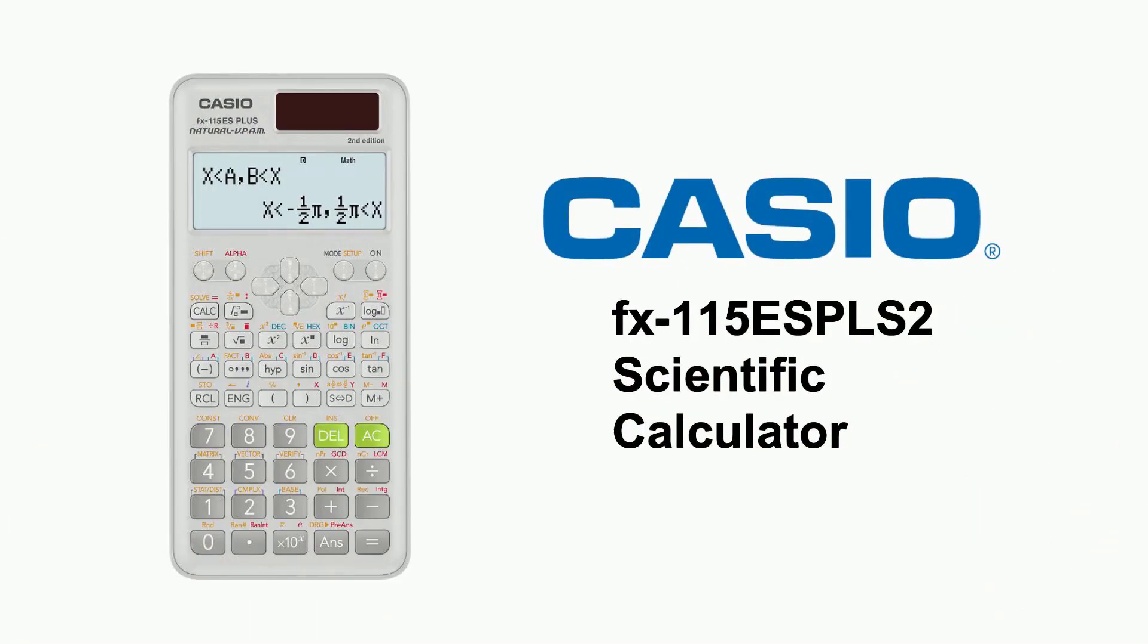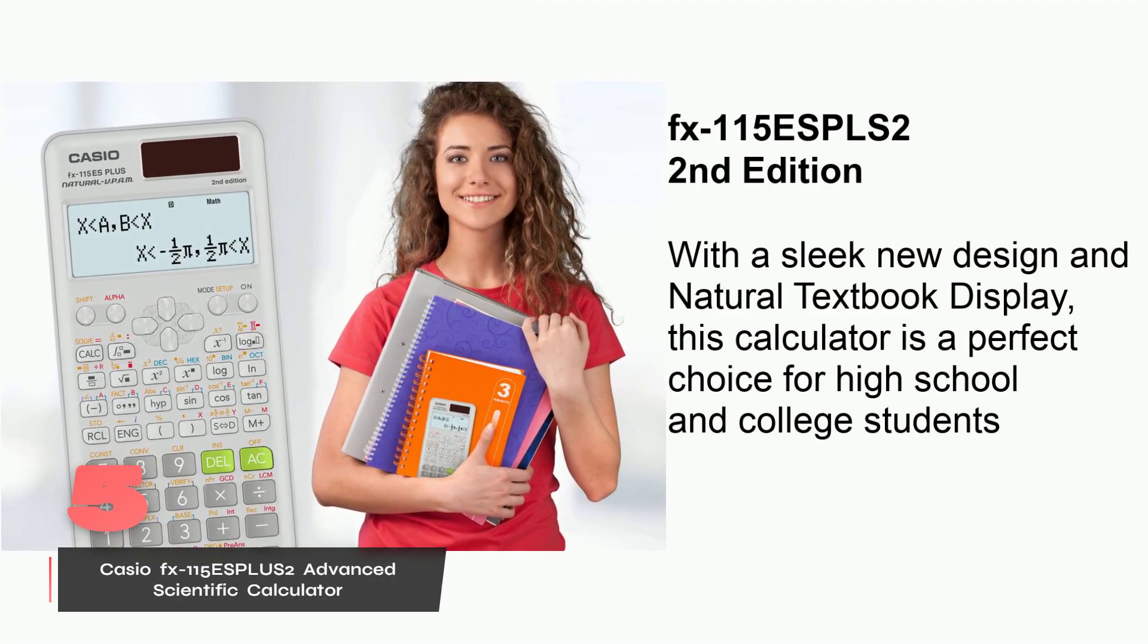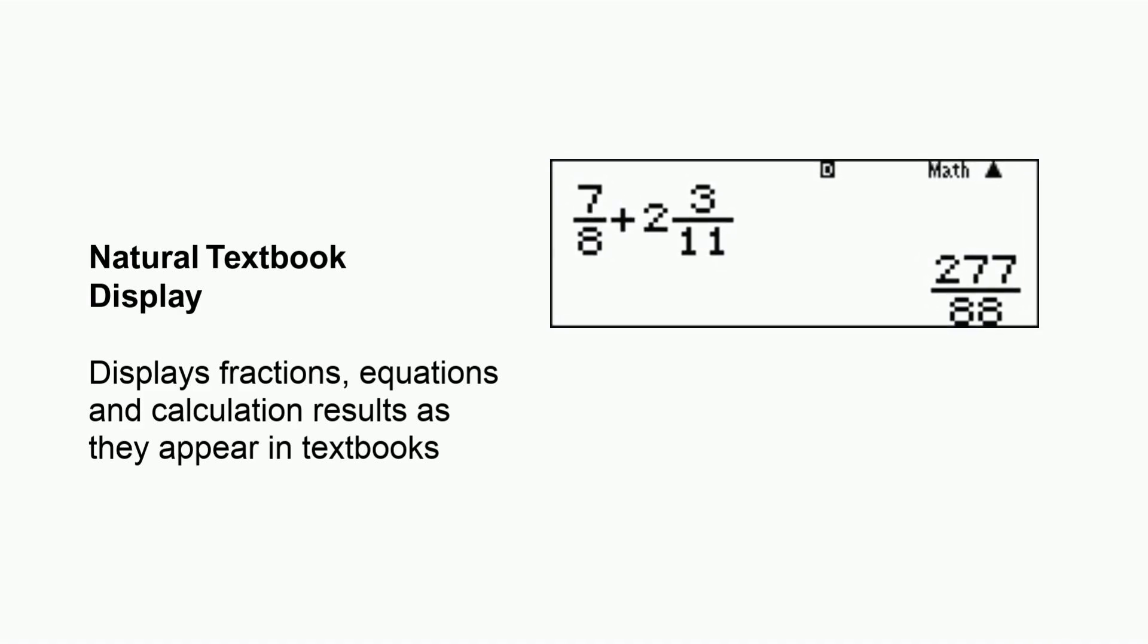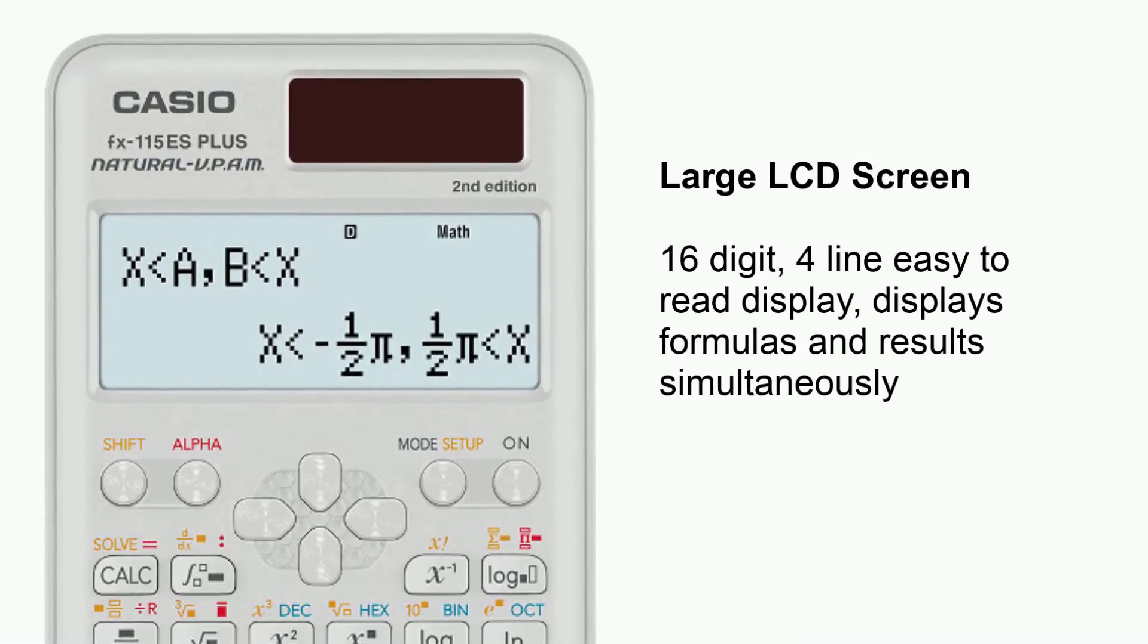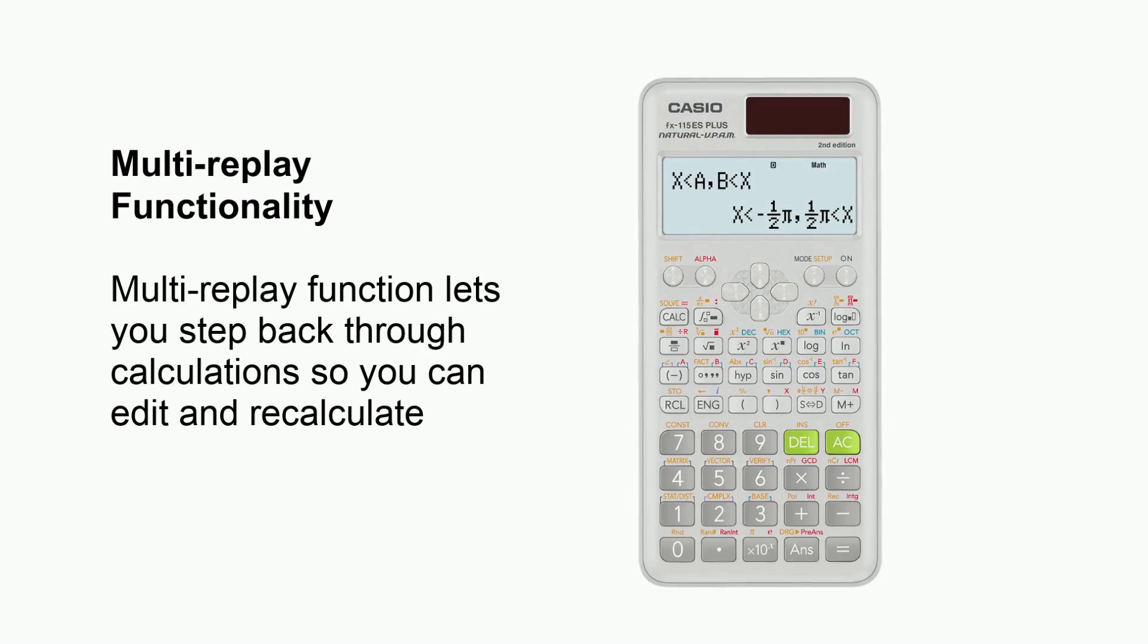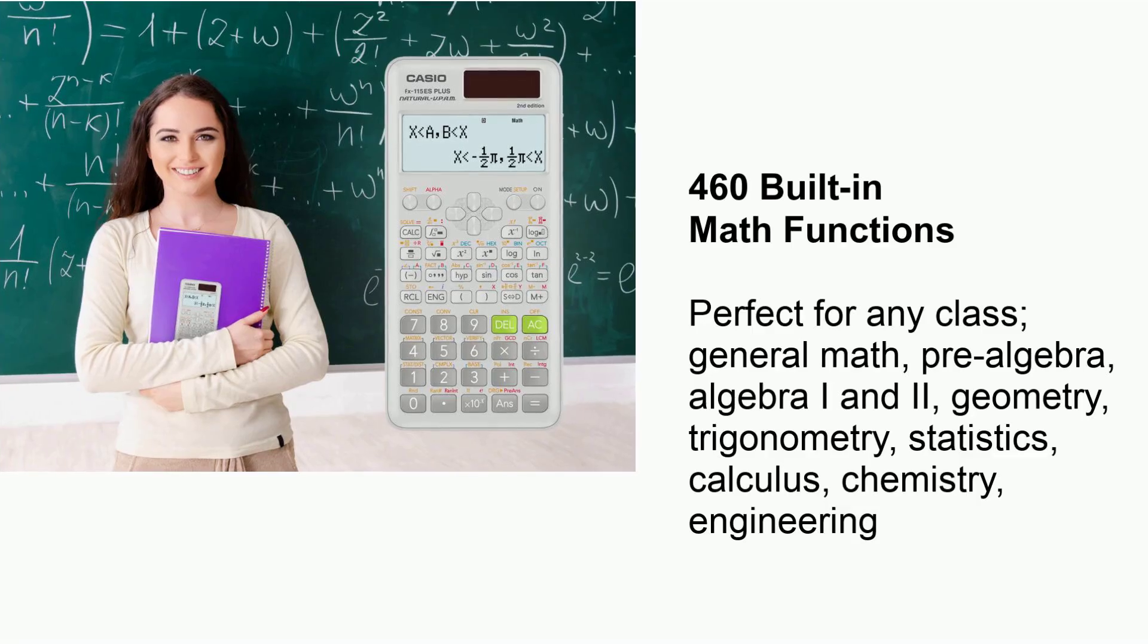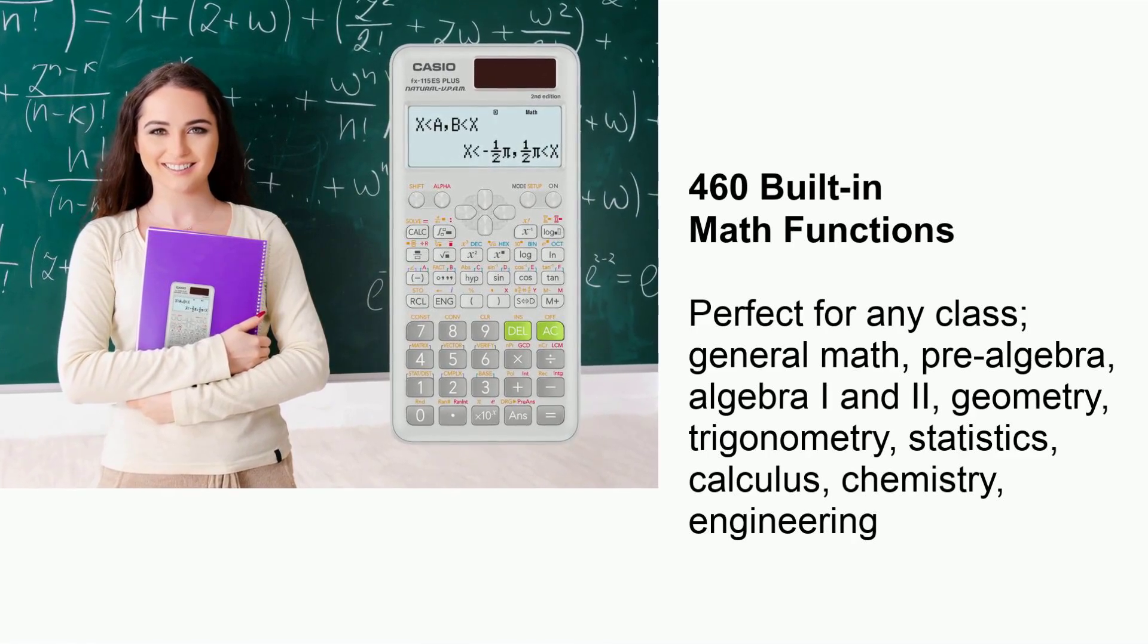The Casio FX-115ES Plus 2 is honestly one of those calculators that just makes your life easier. You know how math textbooks show equations in that clear, logical way? That's exactly what you get on its four-line LCD display. And trust me, when you're knee-deep in complex calculations, being able to see everything laid out naturally makes a huge difference. What really makes this calculator stand out is how much it can actually do. You're getting over 280 functions packed into this thing. Whether you're working with basic fractions or diving into more complex stuff like linear regression, it's got your back. I found it super helpful for both college-level math and professional engineering work.